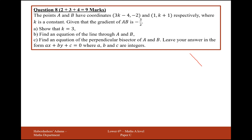A line that has a gradient of minus 3 over 2 is going to roughly look like this. We have the coordinate (3k-4, -2) up here and the coordinate (1, k+1) down here. What we do is difference in y over difference in x, and show that this must equal minus 3 over 2.